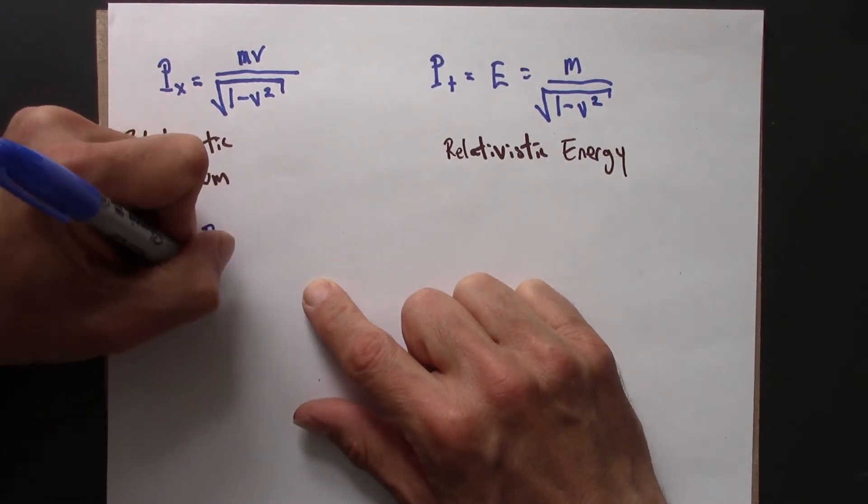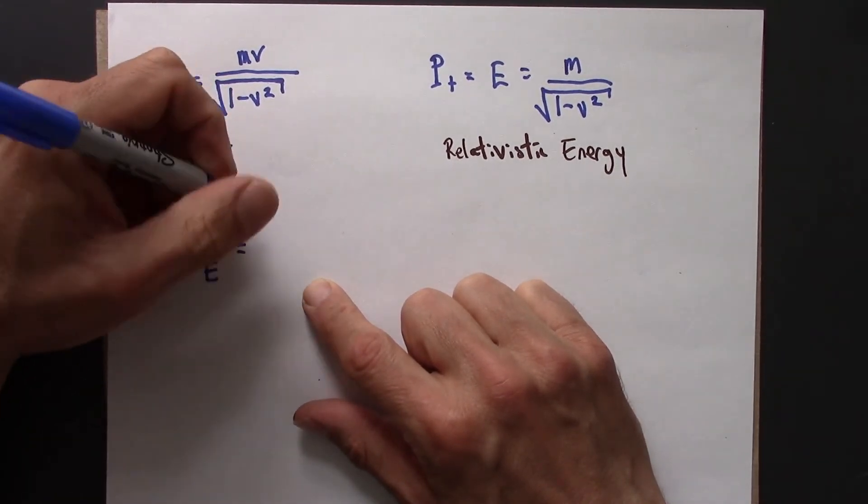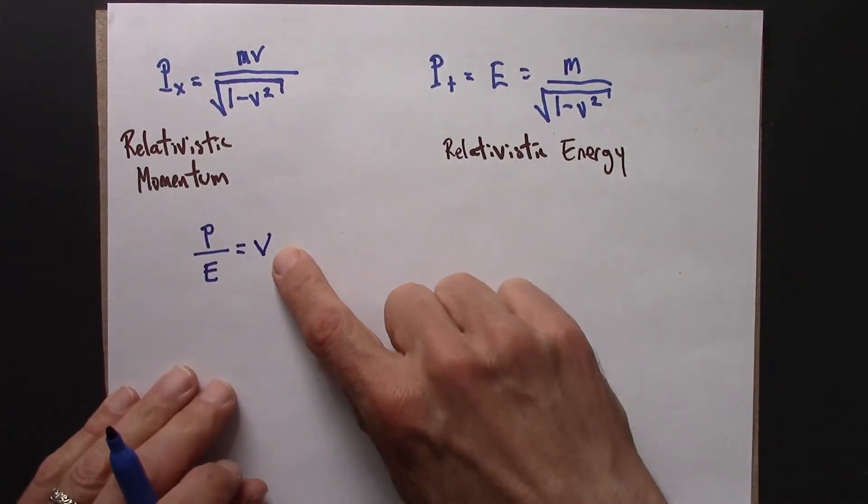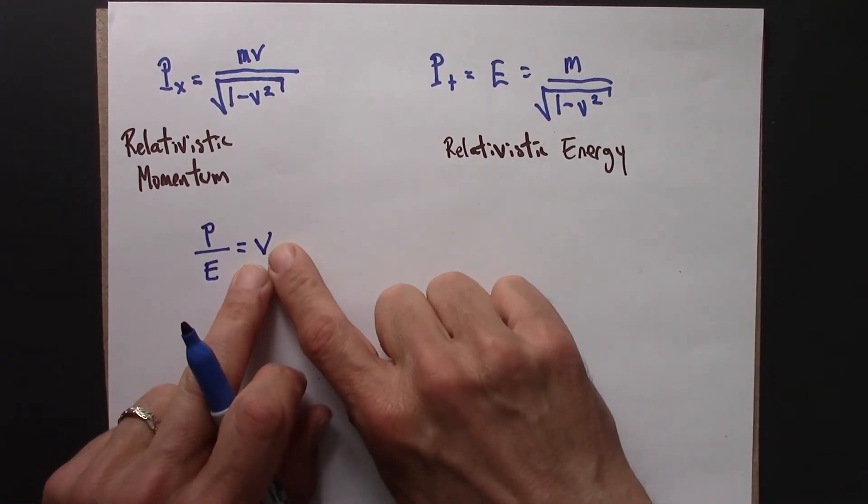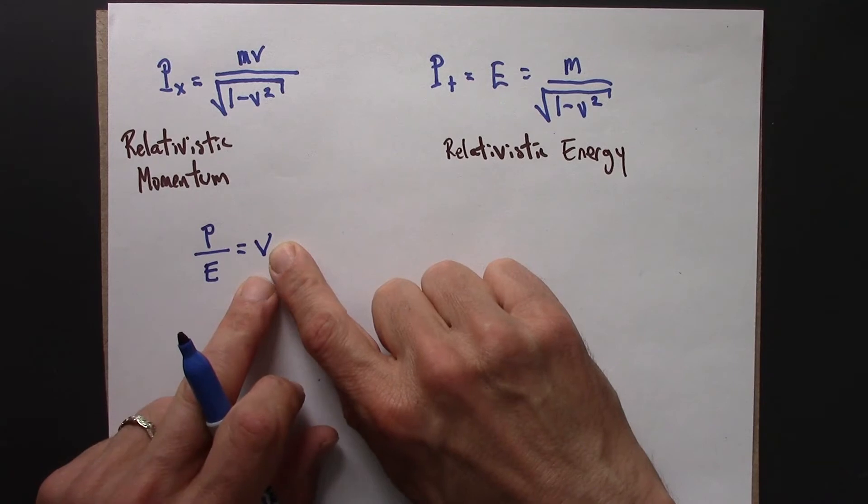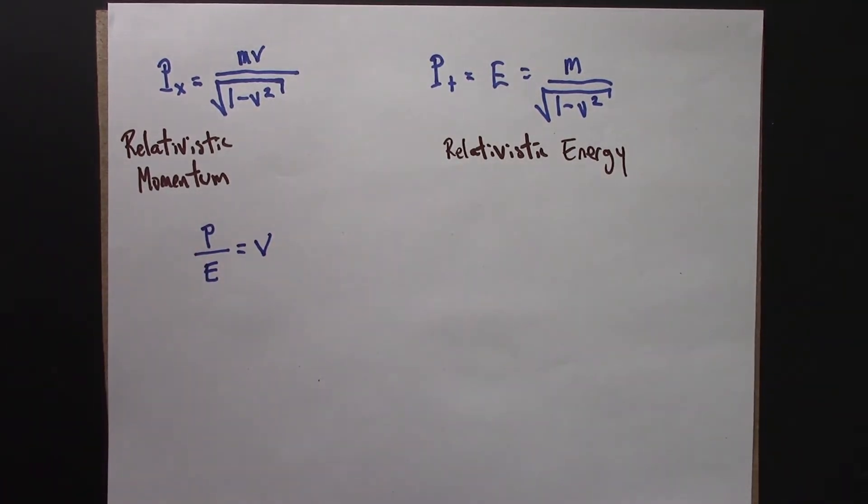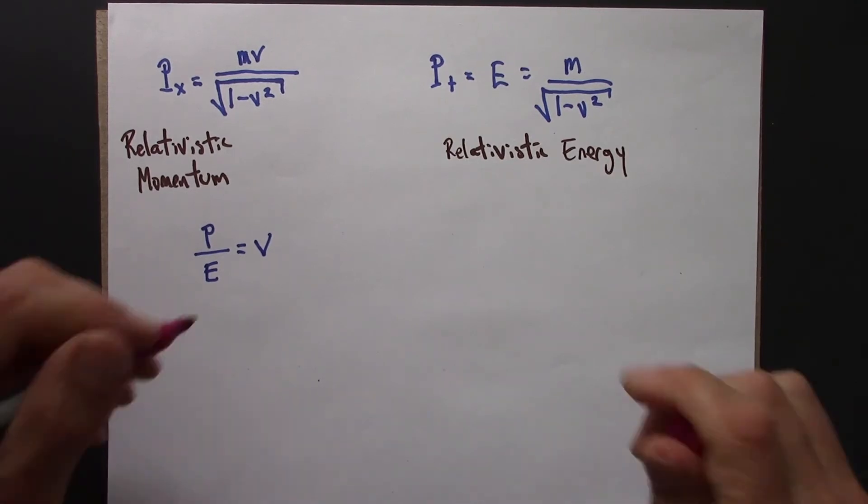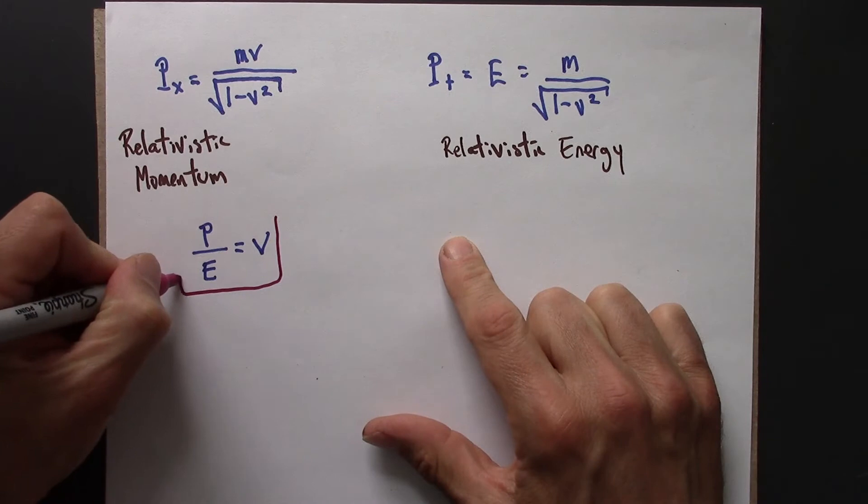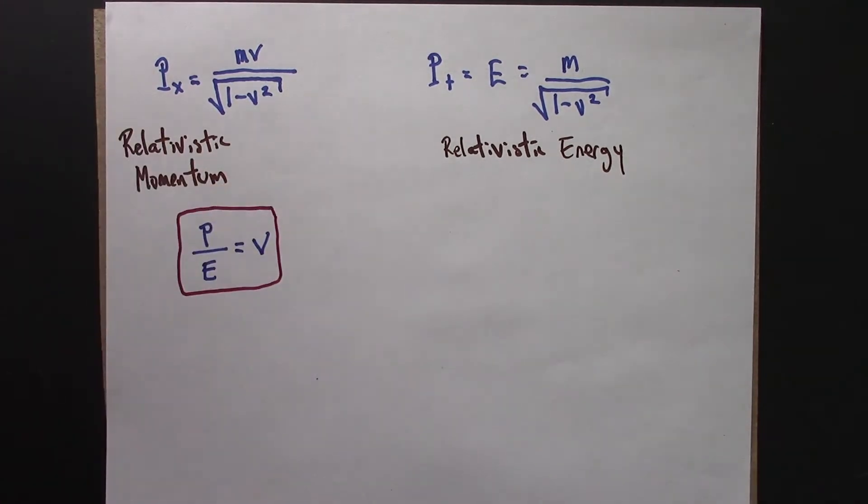which says that p over e is just v. So v here is the relativistic SR speed, relativistic momentum over relativistic energy. Maybe that's important enough that that deserves a box.